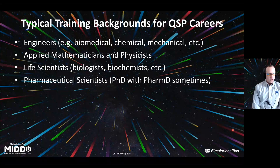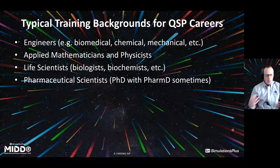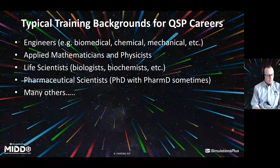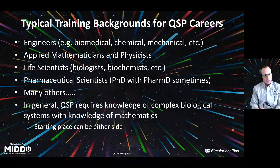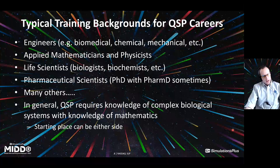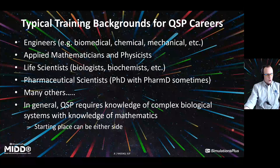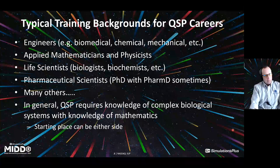Pharmaceutical scientists may have a bit more handle on drug development as a whole than some other disciplines. Each discipline has its own strengths and weaknesses, and there are many others as well — this is not meant to be an exhaustive list. In general, what QSP really requires is knowledge of complex biological systems combined with knowledge of mathematics — either side of that can be your starting place. Regardless of which side you start on, you're going to have to work on the other side over your career, and it's those two things coming together that makes strong QSP modeling careers.